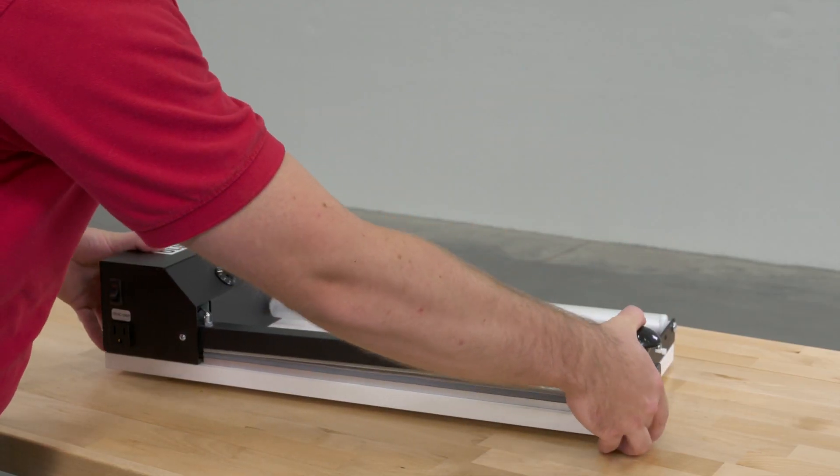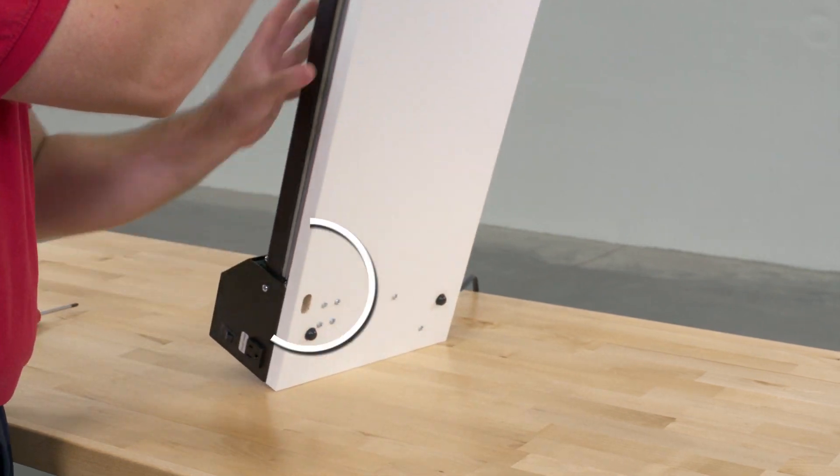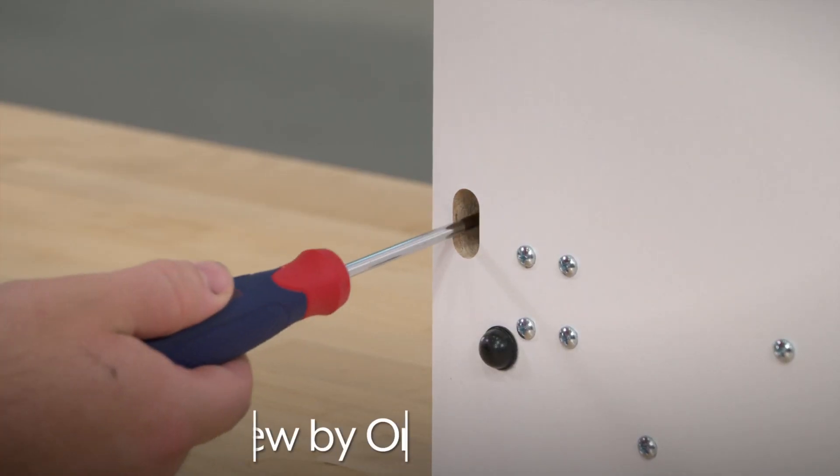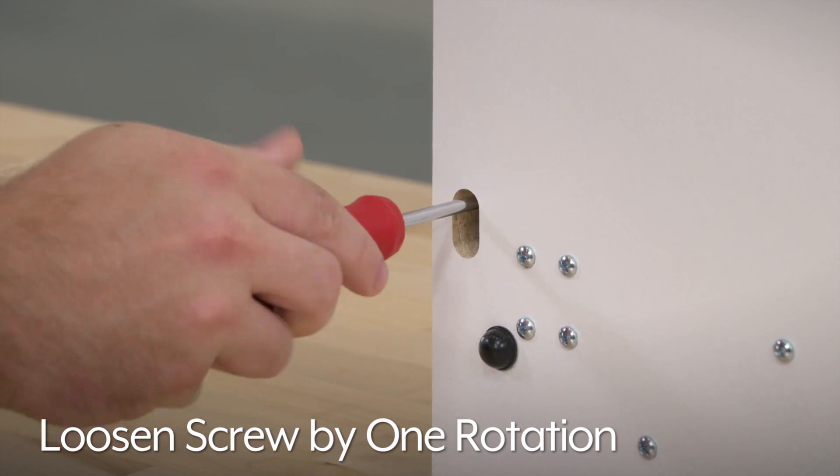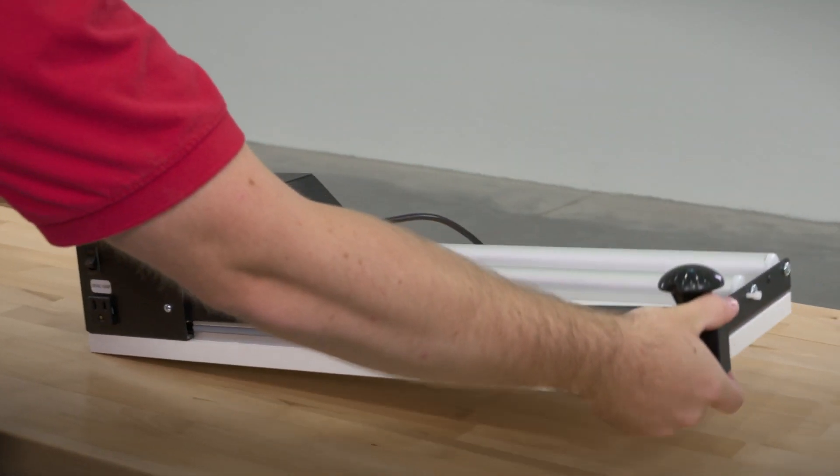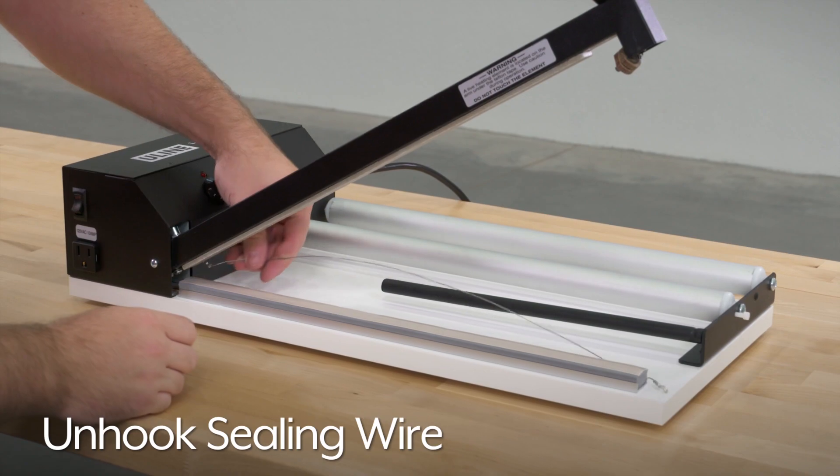Pull the sealing arm into a downward position. Through the access hole on the bottom of the base, use a Phillips screwdriver to loosen one rotation, but do not remove the screw. Unhook the other end of the sealing wire.